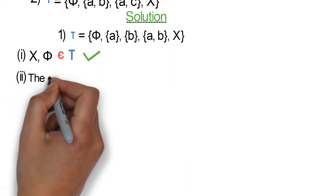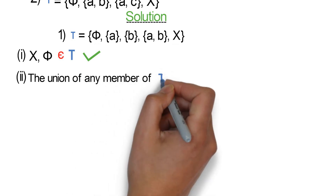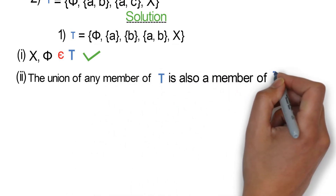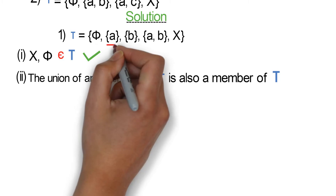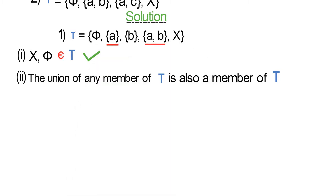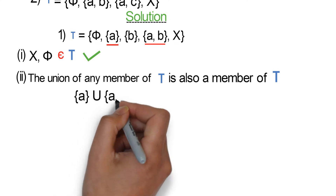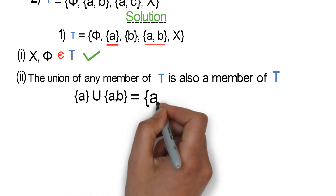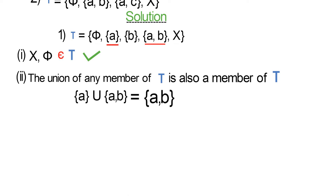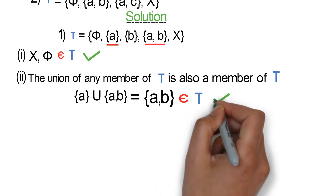Condition 2 states that the union of any member of tau is also a member of tau. Let's take any two elements from the set tau and find their union. The union of the singleton set {a} and the set {a, b} will give us the set {a, b}, which is also a member of tau. So condition 2 holds.